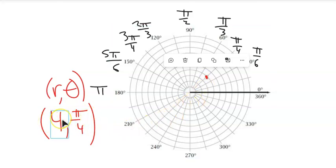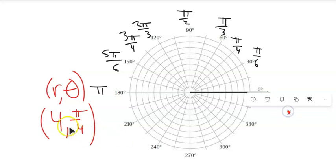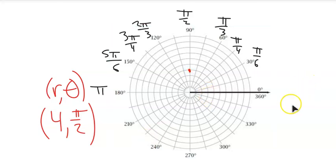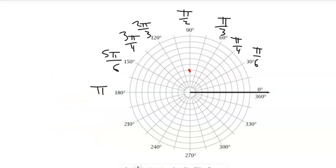If instead of (4, π/4) it was 5, the point would be further out. If it was 3, it would be closer in, but the same rotation. Or if I did the point (4, π/2), the distance is still 4, but now it's been rotated up to π/2. For the point (2, π/3), π/3 is this rotation, but it's only out 2, so it would be right here.